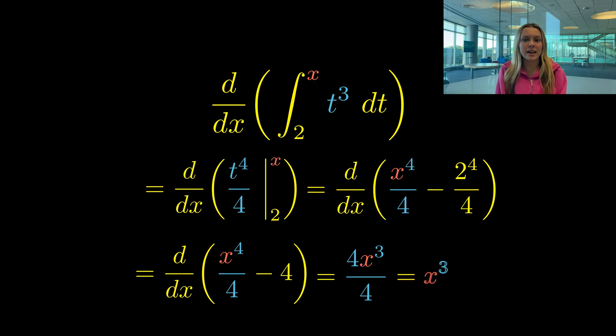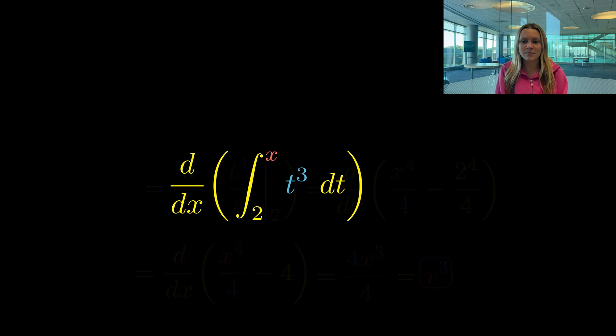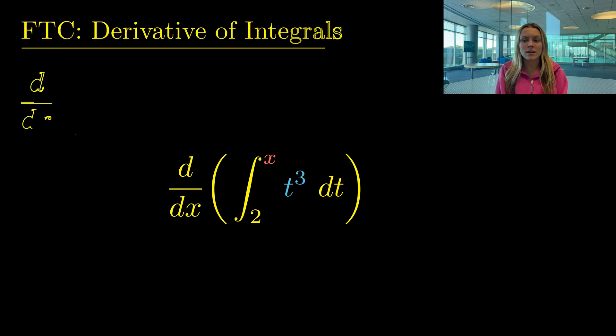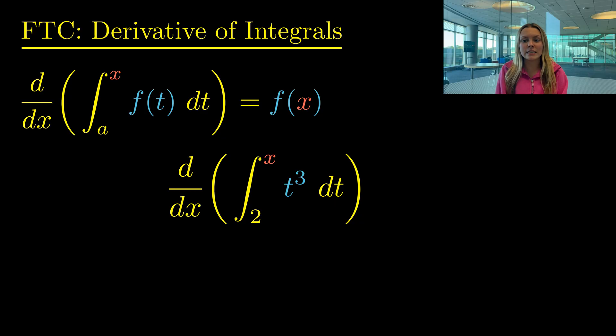And our answer fully simplifies to be x³. But the intended and easiest way to solve this question is by using the fundamental theorem of calculus, which says in order to take a derivative of a function defined as an integral, all you do is take your upper limit of x and plug it in for t inside the integrand, and we can completely ignore the bottom limit constant. So to find our answer, we just replace our t³ with x³.